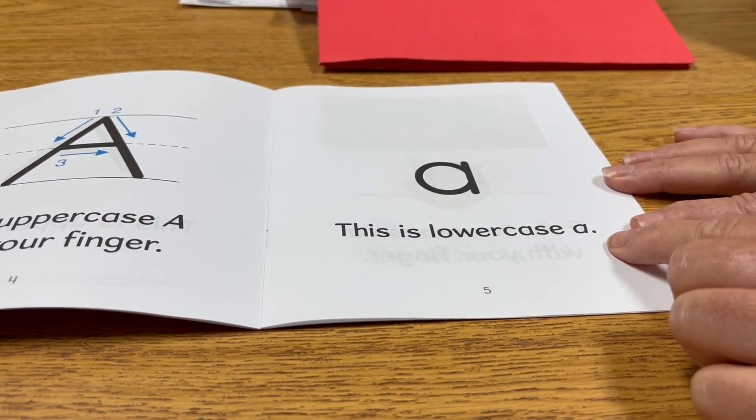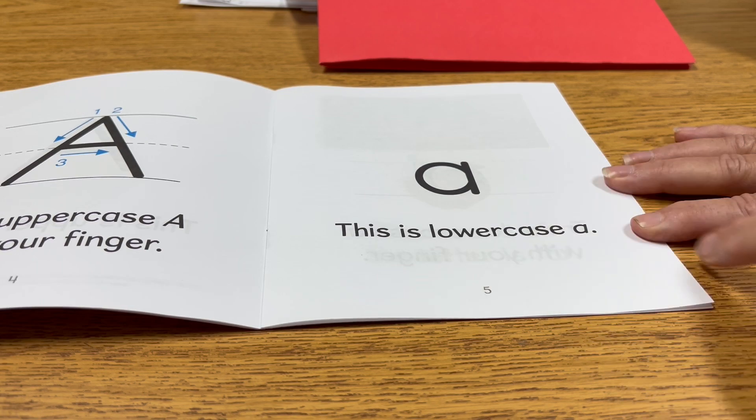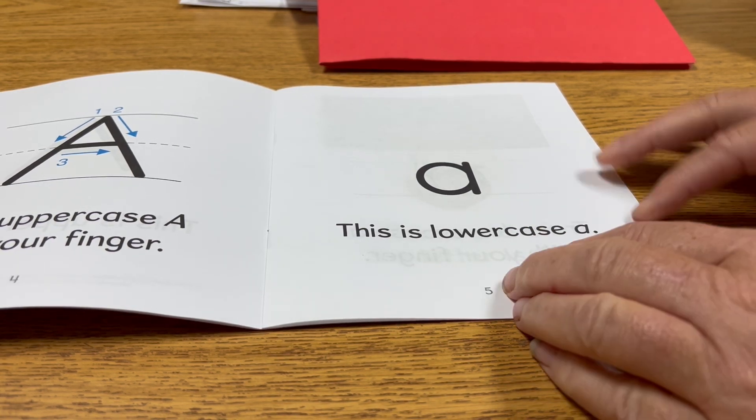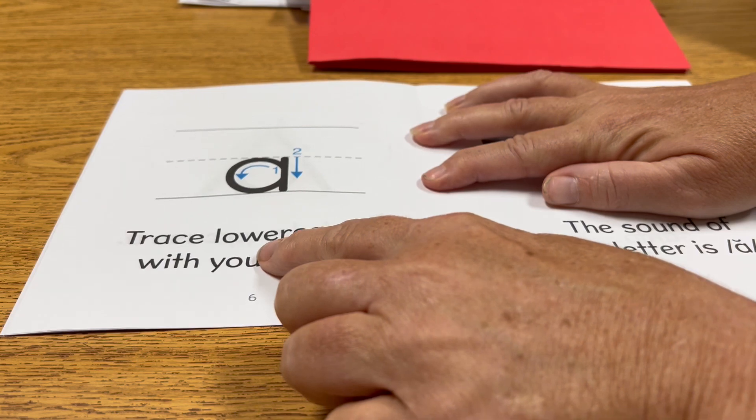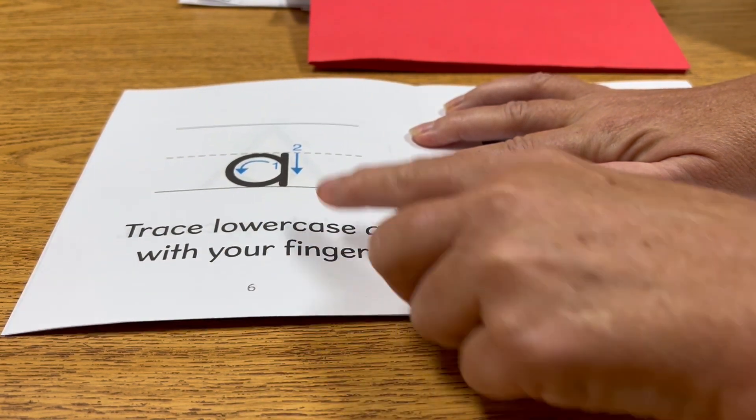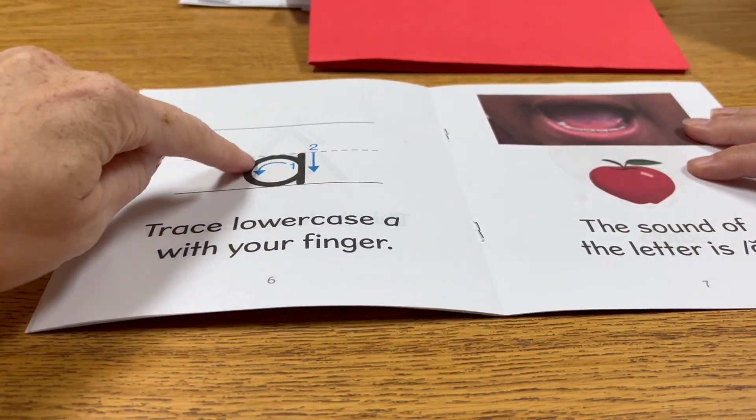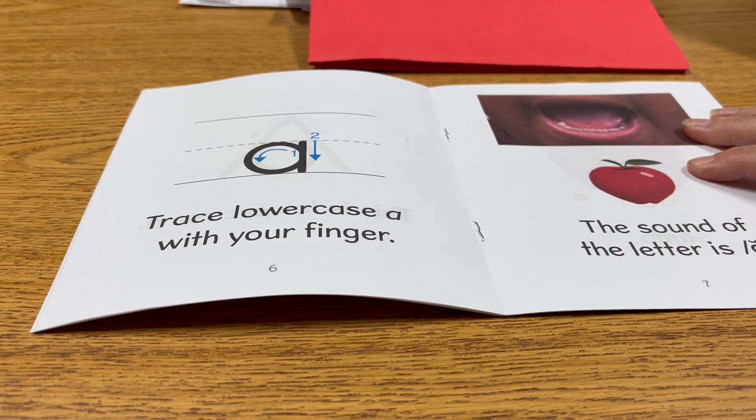This is lowercase A. What letter is that? Lowercase A. Trace lowercase A with your finger. You try it. Around and down. Good.